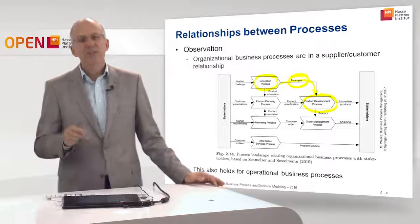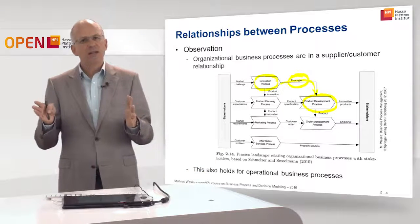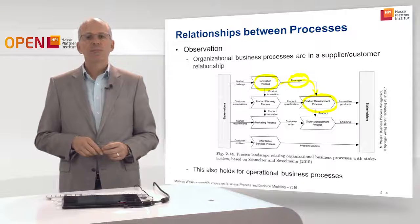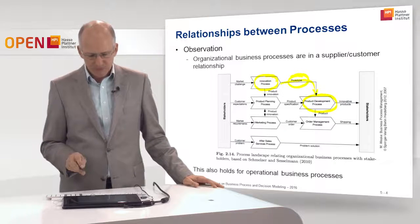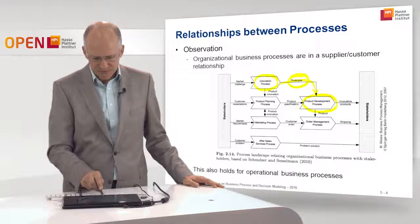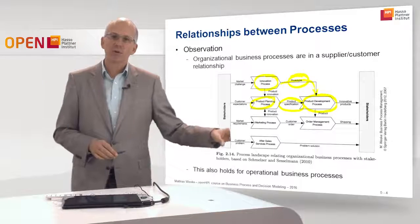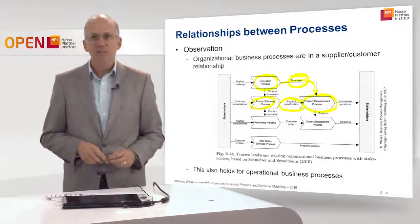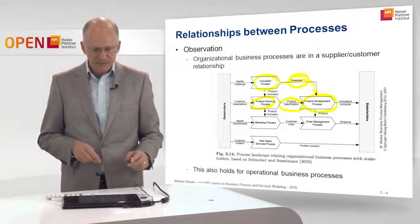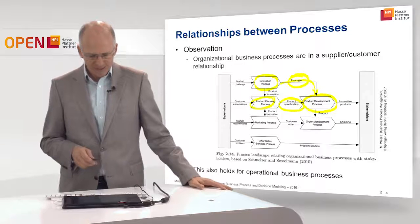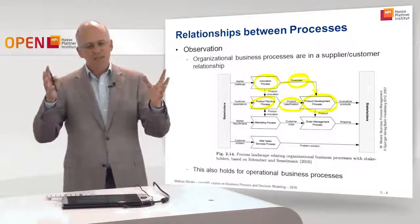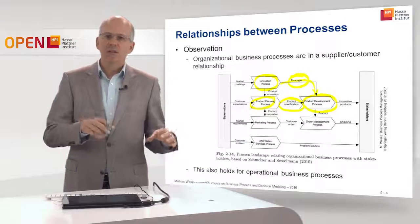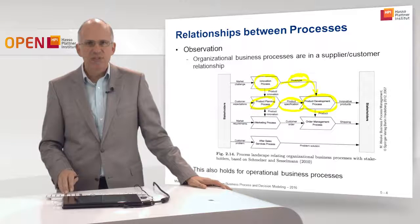The innovation process creates a prototype, which is then used as input for the product development process. Similarly, between product planning and product development, the product specification is created by product planning and used by product development. So we have a supplier-customer relationship between organizational business processes, and this holds not only at the high-level but also between the operational business processes we typically represent in BPMN.